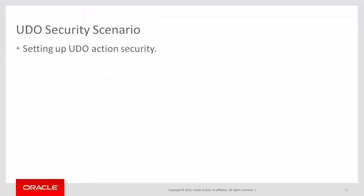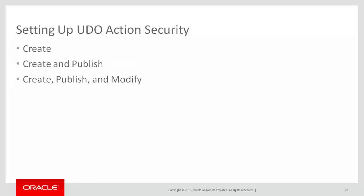Now that we've seen that all UDO features are activated, in the next part of this tutorial we will show a scenario that depicts setting up UDO action security that authorizes a user to create a query UDO and request to publish it. And then we'll show how to set up UDO view security to authorize other Enterprise One users to work with the query UDO. In this scenario, we are going to authorize user ID SB66214 to create and publish query UDOs. To set up UDO action security, let's access Enterprise One again.